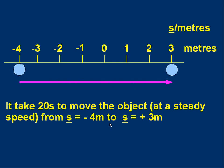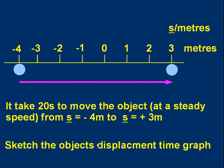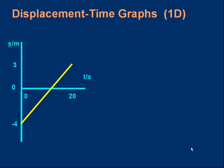And here's another exercise for you. Can you sketch the object's displacement time graph? What would it look like? Pause to try that for yourself. And I hope you've done something like this. Label the axes, put the values in. It starts off at minus 4 when time is 0. And after 20 seconds, it's finished at s equals 3. And if it's a steady speed, it's a straight line. Okay, hope that makes sense.